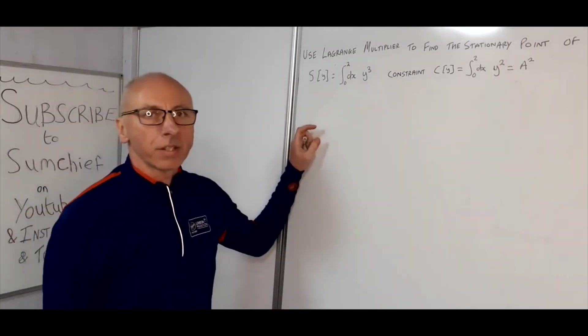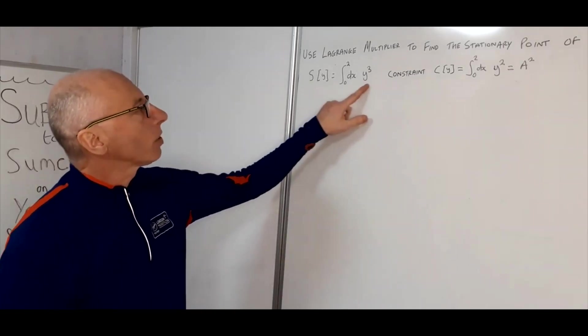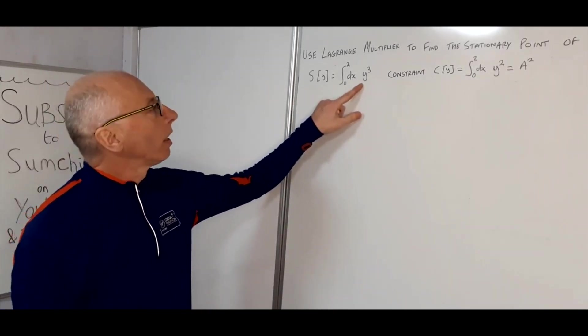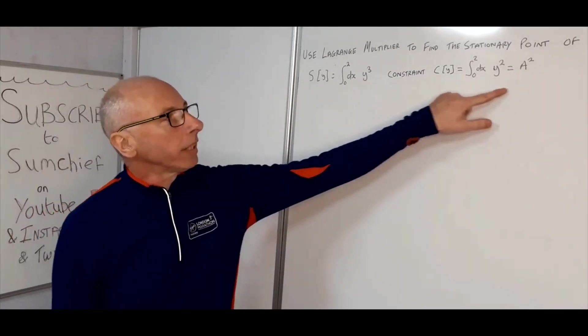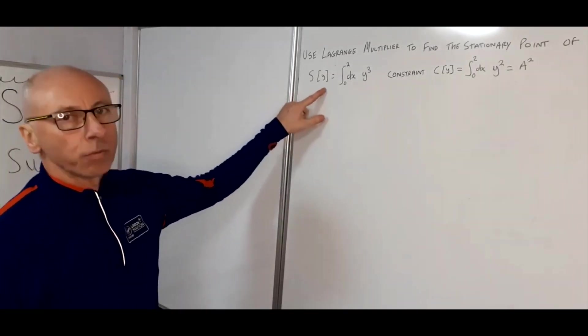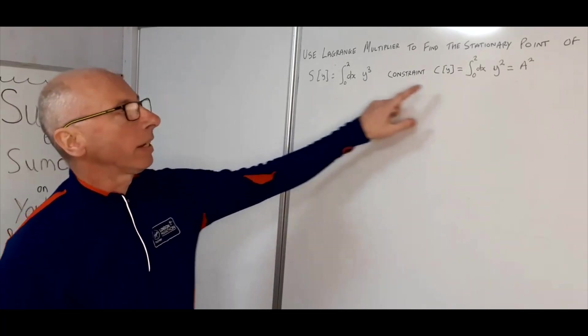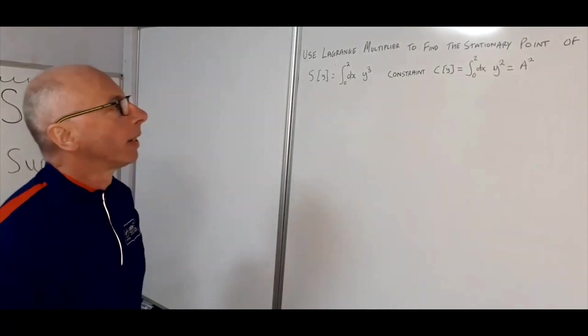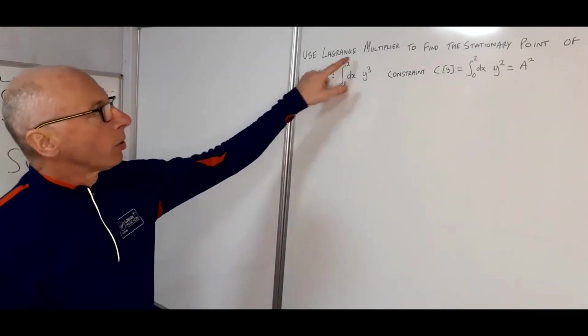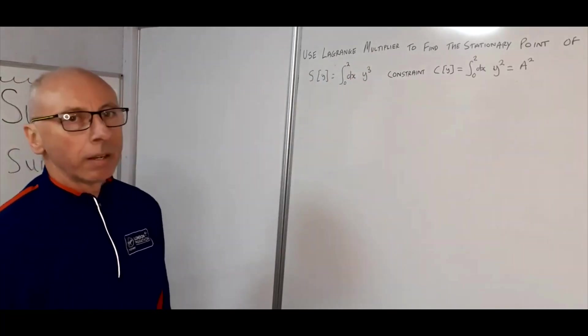OK, so we're going to find a stationary point of this functional here with this constraint here. So this functional is S and the constraint is this one here, C, and you'll notice that they are both integrals.